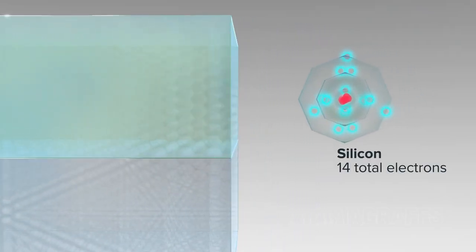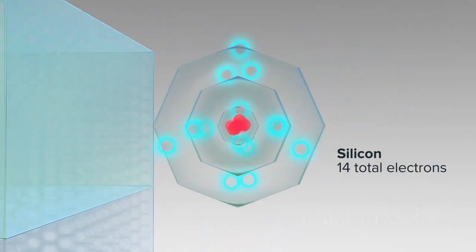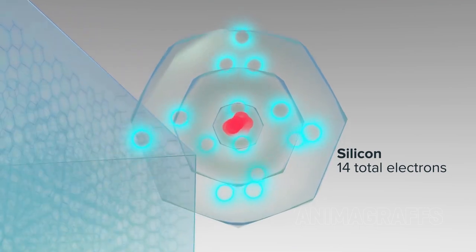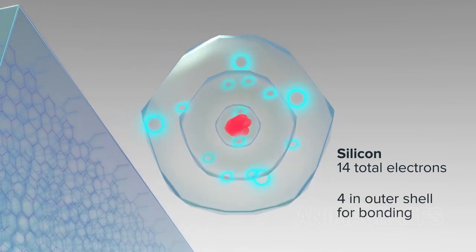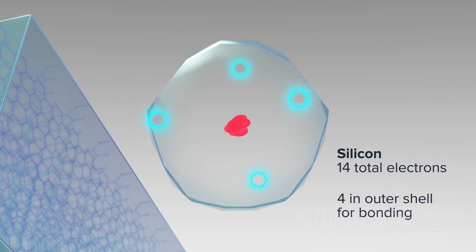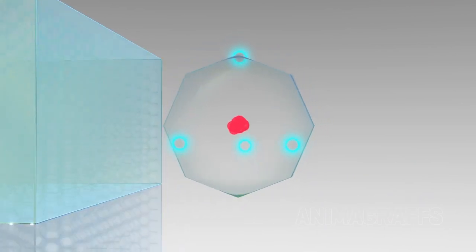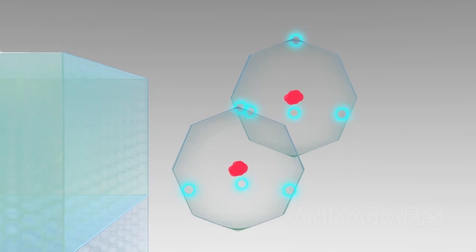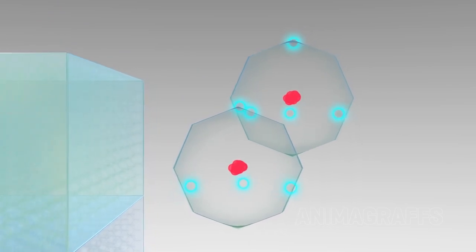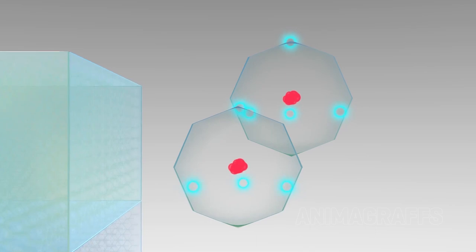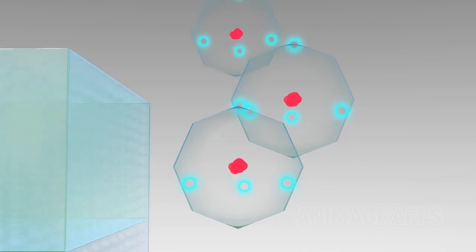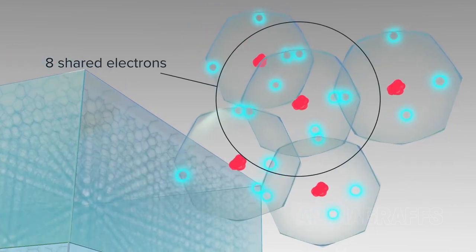A silicon atom has 14 total electrons at various energy levels, or shells, with four in its outermost shell. Electrons in the outer shell are used for bonding with other atoms. Stable atoms generally favor eight electrons in the outer shell, so silicon atoms share electrons when bonding to meet that number.